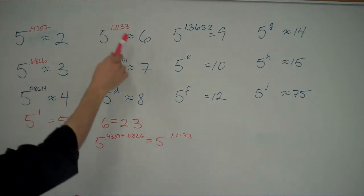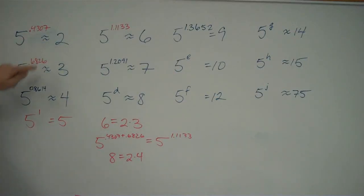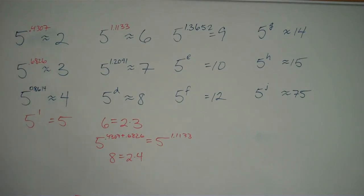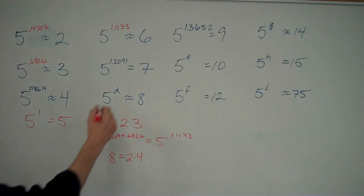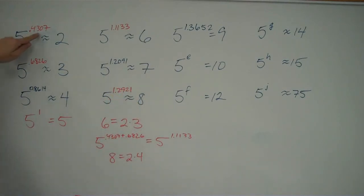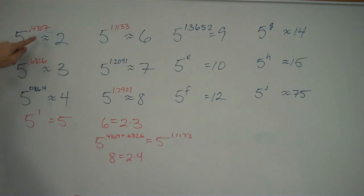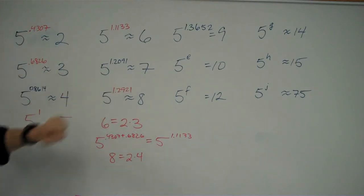I'm all the way up through 7. For 8, I'll do the exact same thing. 6 was 2 times 3, and 8 is 2 times 4. So I can take the exponents for 2 and 4: 5 to the 0.4307 times 5 to the 0.8614. Adding those exponents, I get 1.2921. I could have also looked at this as 8 being 2 to the 3rd power, so I'd multiply my exponent times 3 — and I get the exact same answer, 1.2921.